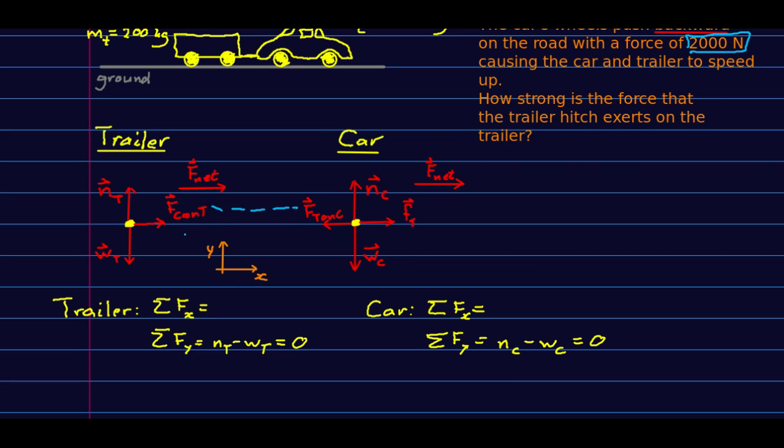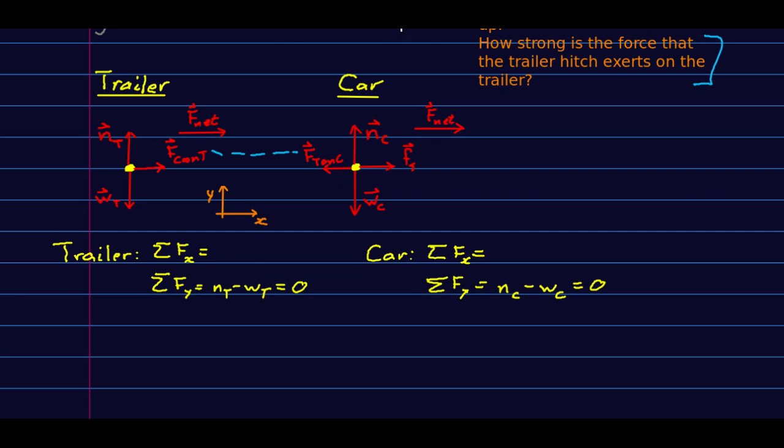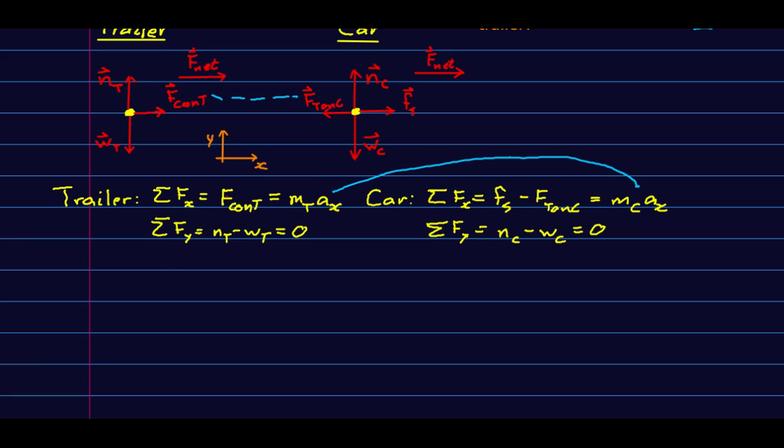So I've already written out the y components. They're pretty uninteresting. They're just telling us that the weights and the normals have the same magnitudes. And so now let's do this part. So F_car on trailer equals. Now here's a detail of Newton's second law that isn't often explicitly stated. The sum of forces on an object equals the mass of that object times its acceleration. And so this is the mass of the trailer that goes here. And similarly, here we've got F_s minus the force that the trailer exerts on the car. And that has to equal the mass of the car, a_x. And if the car and the trailer move together, those accelerations have to be the same. So I've used the same symbol for them. And now let's go about solving for what we're looking for, which is this force right here.